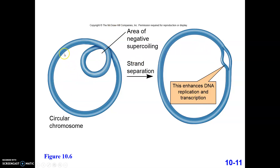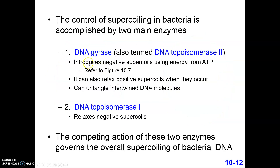This supercoiling effect is facilitated by proteins. One protein is DNA gyrase, also called DNA topoisomerase 2. We'll just call it gyrase to make it easier, since topoisomerase 1 and 2 can be hard to remember — gyrase is also a historical name for it. This protein complex uses the energy from ATP in order to make negative supercoils. It can also have the effect of relaxing positive supercoils when they are accidentally introduced, and this can also lead to untangling intertwined DNA molecules. So this is using the power of ATP in order to induce that negative supercoiling.